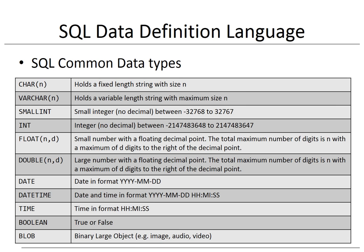DATE represents a date in the format year, month, day. DATETIME represents date and time in the specified format. TIME represents time in the format hours, minutes, seconds. BOOLEAN represents true or false. BLOB represents a binary large object, such as an image, audio, or video.